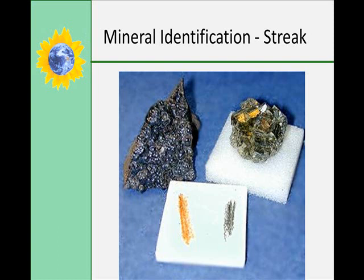Streak tests tell you what color is the streak left behind by a mineral after it's rubbed on a rough white tile. Colors are sometimes unique. The one on the right is fool's gold, iron pyrite, and you can see that its streak is gray. If it were real gold, it would streak gold.